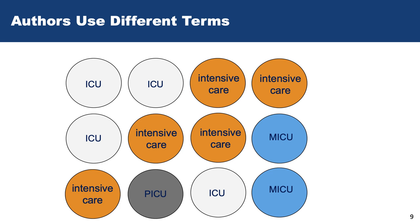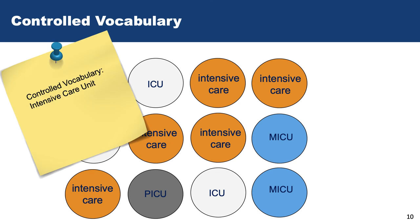What has happened is these databases have developed controlled vocabulary, and they index all the articles. There are actual people who read all the articles in Medline and when they index it, they tag it with a standardized term. The official MeSH term for ICU is 'Intensive Care Units.' Any article about this concept gets tagged with that MeSH, so when we search with it all those articles come up regardless of how the authors referred to the term.